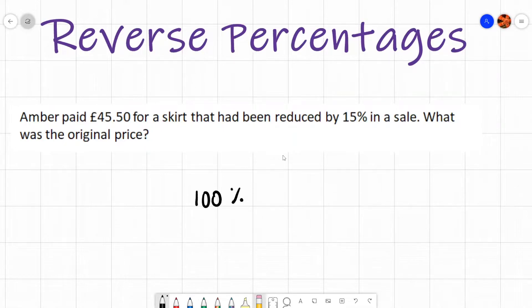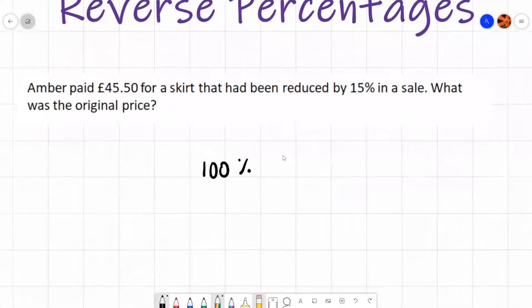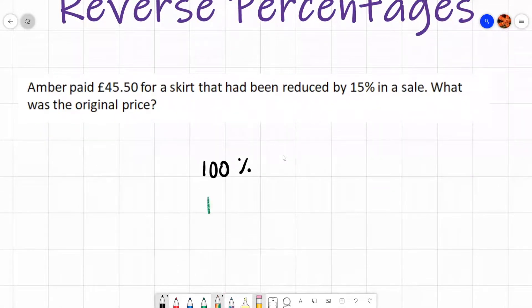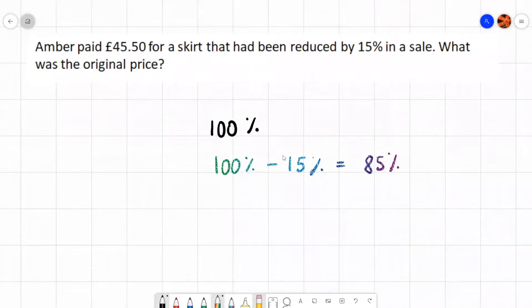But the skirt is being reduced by 15%. So that means 100% take away 15%, okay? That would leave me with 85%. That means the skirt is worth 85% because it has been reduced by 15%. So we're going to say £45 and 50p is worth 85%, okay?